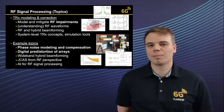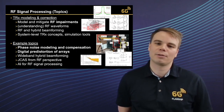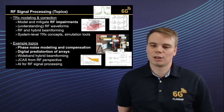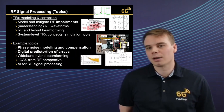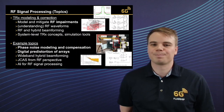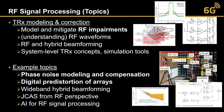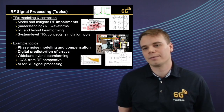RF signal processing is a topic where we do transceiver modeling and correction — that means we try to understand, model, and mitigate RF impairments of the radio. We try to look at the system from a radio waveform perspective. We also do beamforming and try to understand different transceiver architectures and develop simulation tools to simulate hardware as part of the system. Some example topics include phase noise modeling and compensation, digital pre-distortion, wideband beamforming research, joint communication and sensing from an RF hardware perspective, and artificial intelligence and what it means for RF signal processing.